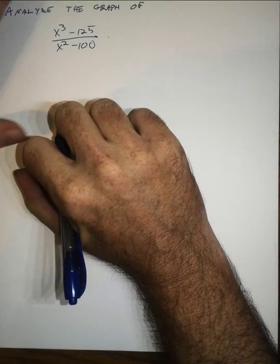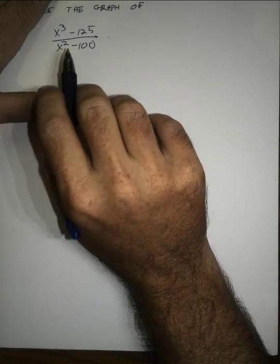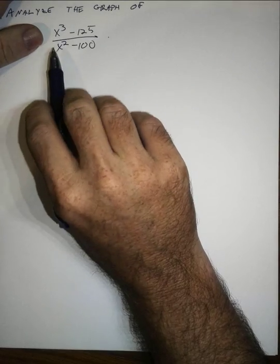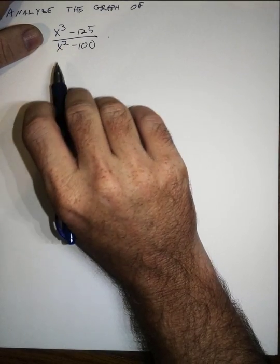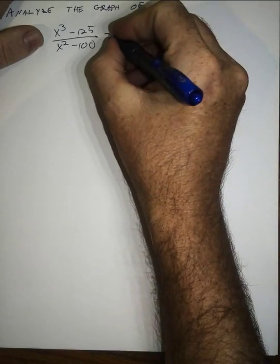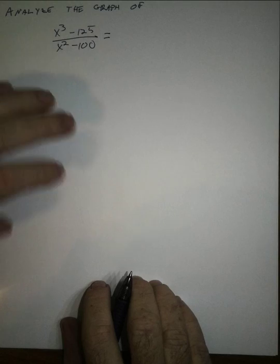In this video, we're going to analyze the graph of a slightly more complicated rational function. This particular question asks us to analyze the graph of x cubed minus 125 over x squared minus 100. For rational functions, we want to write them in their simplified form, so we want to factor both the numerator and the denominator.